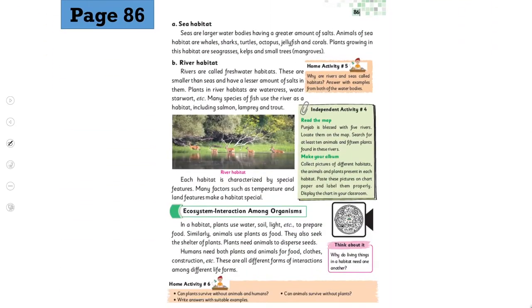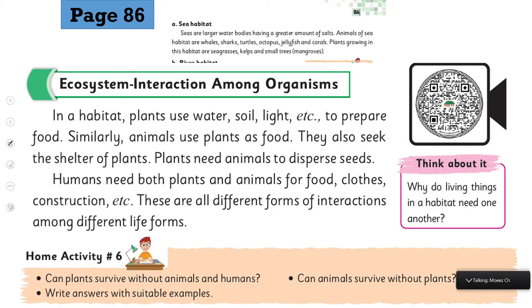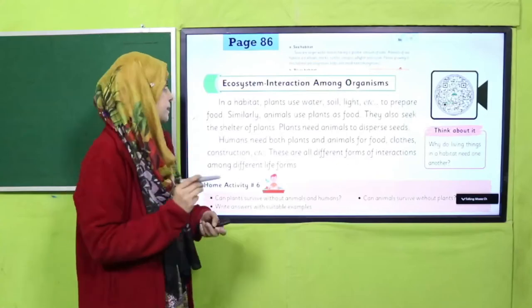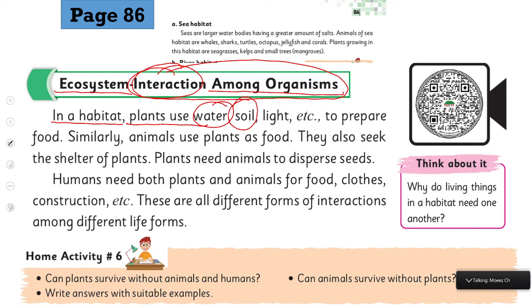Now open page number 86. Today we will talk about ecosystem. The heading is: Ecosystem — Interaction Among Organisms. That means an ecosystem is the interaction among organisms in a habitat. Plants use water, soil, light, etc. — these are the non-living components — to prepare food.